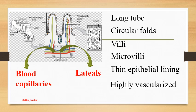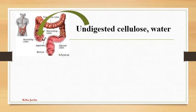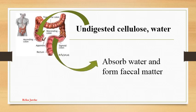Unabsorbed materials in the small intestine are sent to the large intestine. The large intestine is around 1.5 meters long, beginning at the cecum and ending at the anus. Undigested cellulose and water are present in the large intestine. The main functions are absorption of water and formation of fecal matter, which is semi-solid and yellow in color due to bile pigments. Fecal matter contains undigested food, microorganisms, epithelial cells and mucus, and is passed out from the rectum.